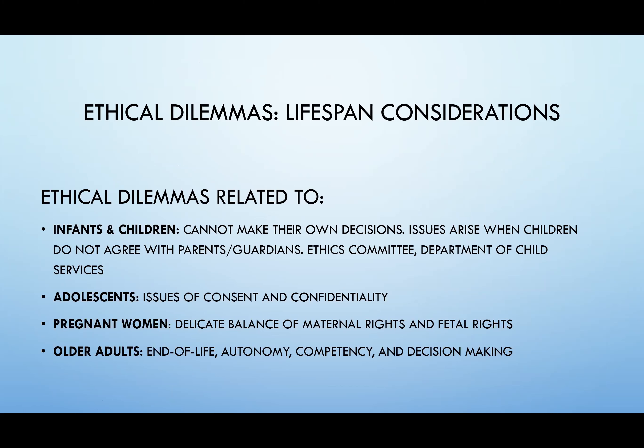Lifespan considerations — pay close attention to infants and children who cannot make their own decisions. Issues can arise when children don't agree with their parents or guardians; typically you'll call an ethics committee or the Department of Child Services. Adolescents — issues of consent and confidentiality. Once an adolescent or teenager has a baby, they're automatically emancipated from their parents and can make their own decisions as if they were an adult.